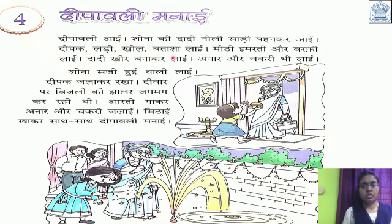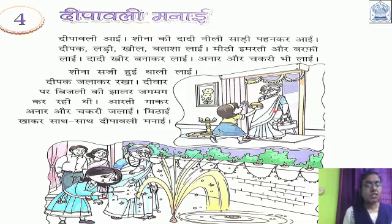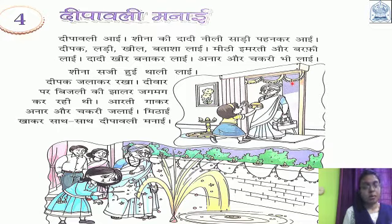Can you see in this picture, children? Yahan par Sheena ki daadi hai, aur ye Sheena hai. Aur Sheena ki daadi ke haath mein kuch saamaan hai. Woh Sheena ke liye kuch le kar aai hai. Chaliye, dekhte hain Sheena ki daadi Sheena ke liye kya-kya le kar aai hai. Aur kuch dikh raha hai tasveer mein — yahan deepak jal raha hai, aur deewar par toran saja hai.